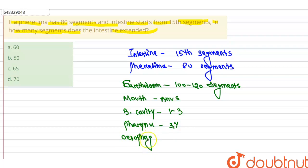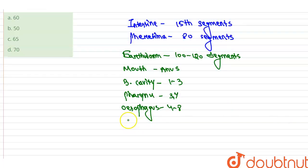The esophagus, which is 4 to 8 segment. Then after esophagus is the gizzard, which is 8 to 9 segment.